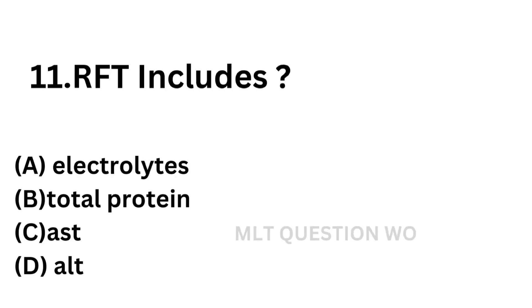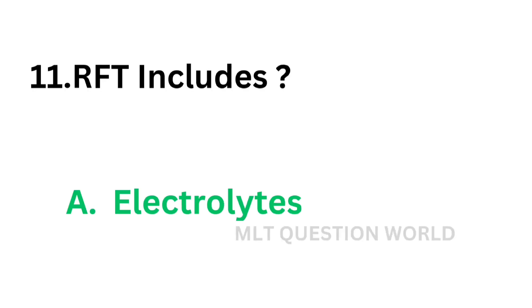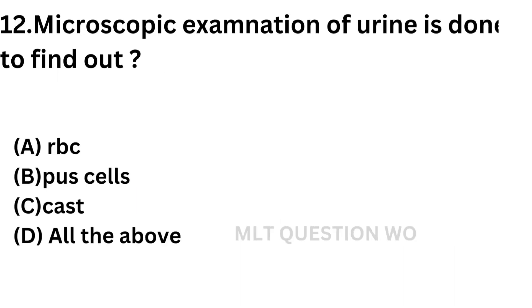Question number 11: RFT includes. RFT means renal function test, which includes. Option A: Electrolytes. Option B: Total protein. Option C: AST. Option D: ALT. Total protein, AST, and ALT are liver function tests. The answer is electrolytes. Electrolytes are necessary for the water balance of the body, so they are included in the renal function test.